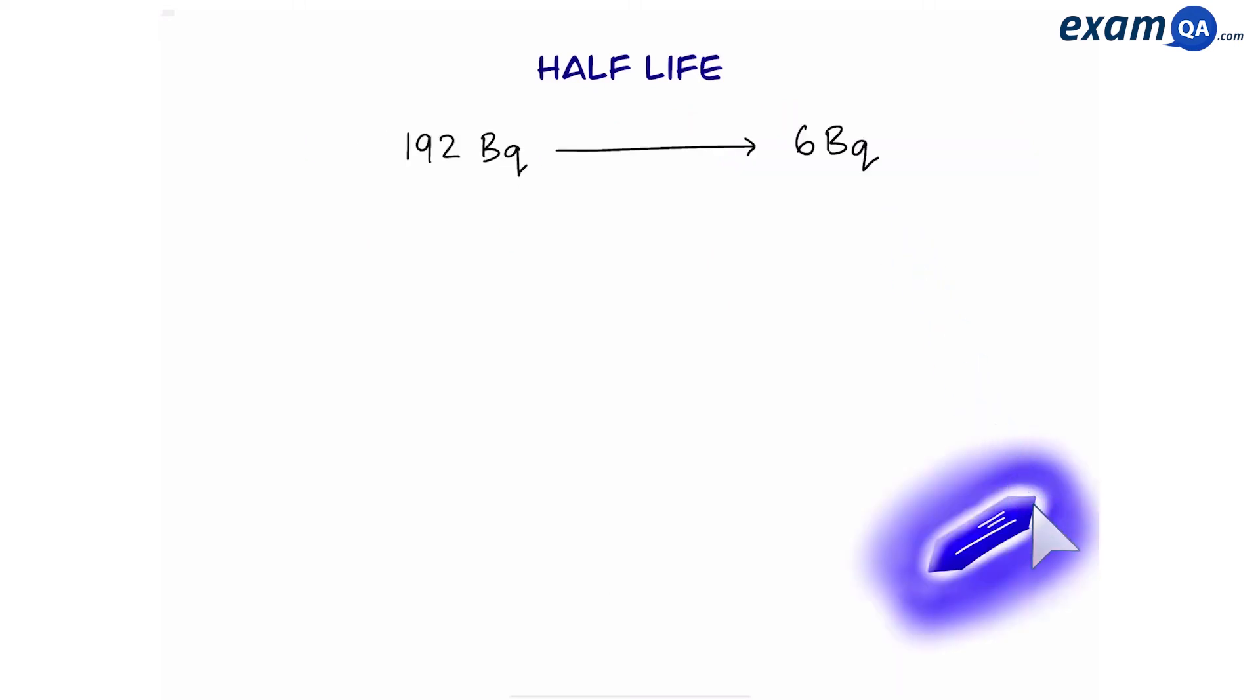So in this sample, we started with 192 becquerels, and we ended up getting 6. The total time for this was 100 minutes. Work out the half-life. Again, we're going to use our normal equation. Now we're used to working out start and end. However, this time we're going to work out half-life. So where is half-life? It's part of n. We know total time is 100 divided by half-life. Since we don't know that, we'll just call it h.